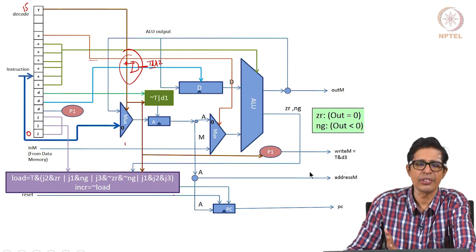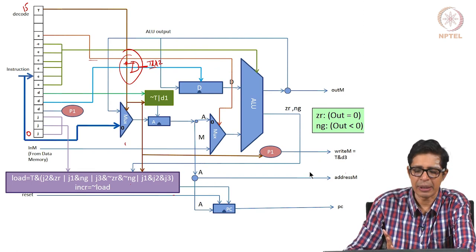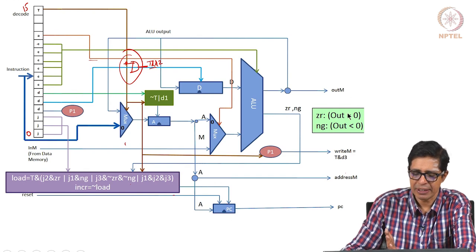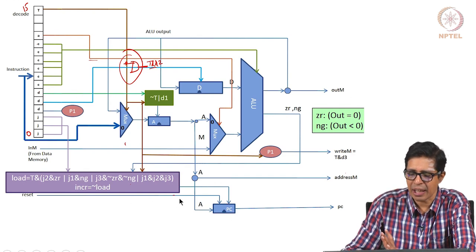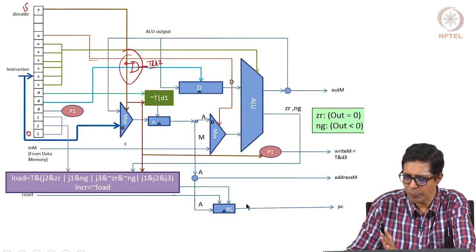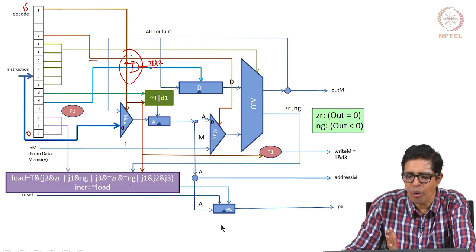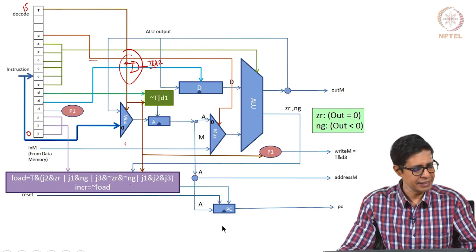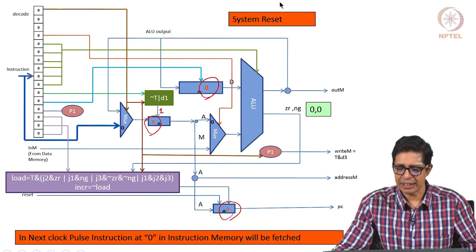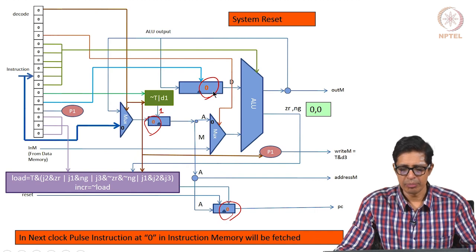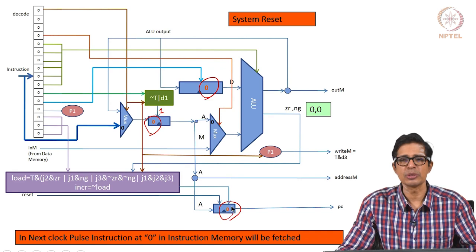The state of the microarchitecture is defined by D, A, PC, and the memory. When a reset comes, D becomes 0, A becomes 0, and PC becomes 0. This is the state of the architecture before reset. When reset comes, the A register becomes 0, the D register becomes 0, and the PC is also reset to 0.